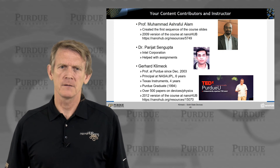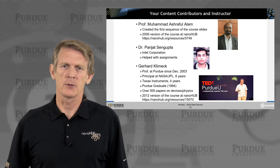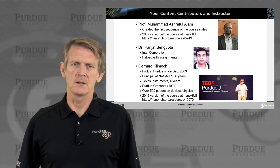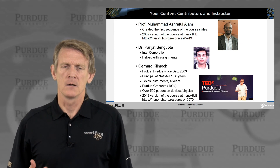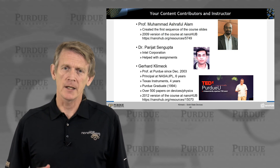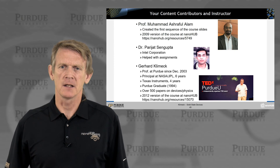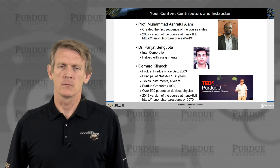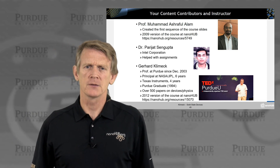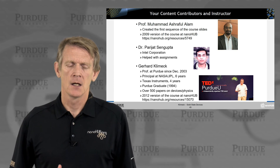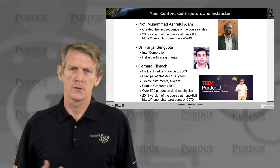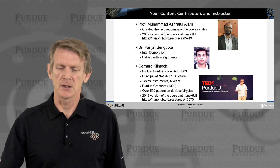My name is Gerhard Klimek. I've been a professor at Purdue since 2003. Before that I had a life in the real world — I worked for NASA JPL for about six years in Southern California, and at Texas Instruments in Dallas for four years in the central research division. I graduated from Purdue in 1994 working on quantum transport, what we call nanoelectronics today. I did publish a few papers in devices and physics, and the 2012 version of this course is also available on nanoHUB.